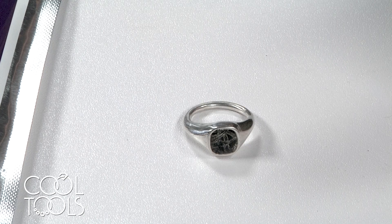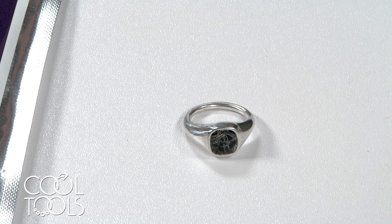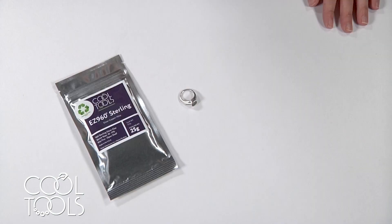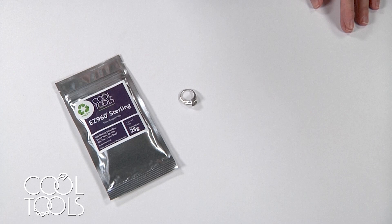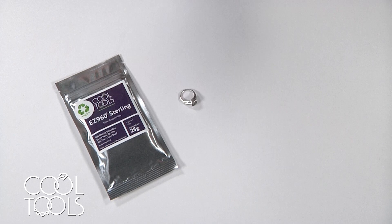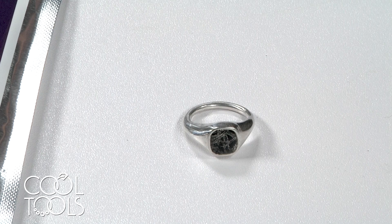For today's project we're working with EZ960, and I know you're thinking Karen, you're going to enamel on sterling? I thought you're supposed to enamel on fine silver. But following a conversation I had with Cindy Pope at the 2019 Enamelist Society Conference, I've tested lots of colors and created several pieces and have found that the enriched fine silver content in our EZ960 sterling alloy allows it to enamel beautifully.